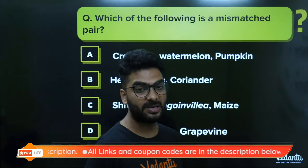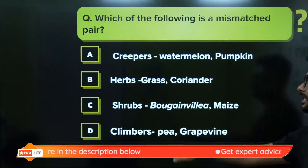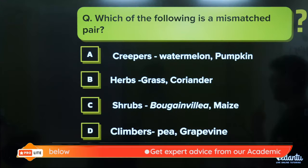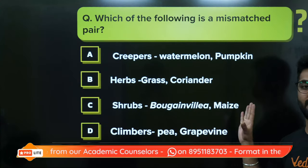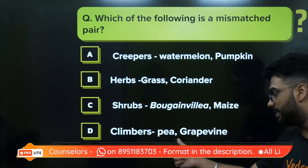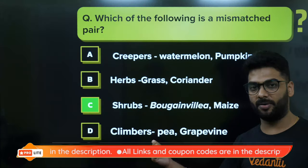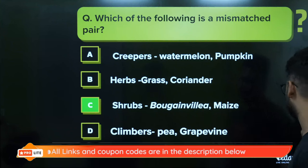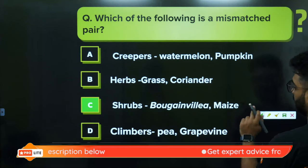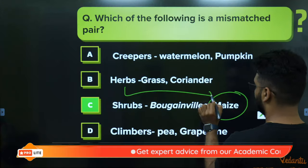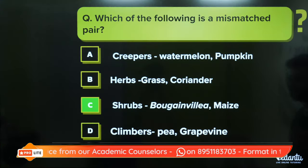Which of the following is a mismatch? Creepers — watermelon and pumpkin: yes, correct match. Herbs — grass and coriander: yes, correct match. Shrubs — bougainvillea and maize: not correct, because maize is corn and comes under herbs. Climbers — pea and grapevine: yes, correct match. So shrubs with bougainvillea and maize is the wrong match — bougainvillea is a shrub with a thin woody stem, but maize qualifies as a herb.